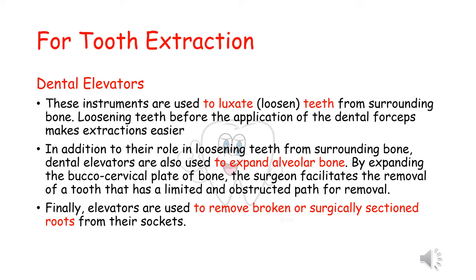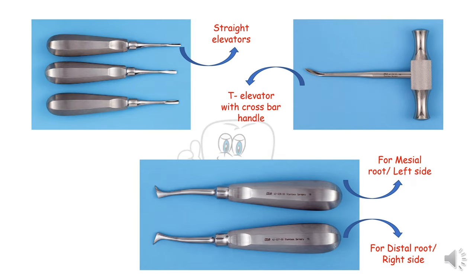Now the instruments for tooth extraction — first, dental elevators. These instruments are used to luxate or loosen the teeth from the surrounding bone. Loosening teeth before the application of dental forceps makes the extraction easier. Dental elevators are also used to expand the alveolar bone, facilitating the removal of a tooth with a limited and obstructed path for removal. Finally, elevators are used to remove broken or surgically sectioned roots from the sockets. The different kinds of elevators include straight elevators, the D-elevator with a crossbar handle, and triangular elevators or Cryers, which come in pairs for left and right, or mesial and distal roots.